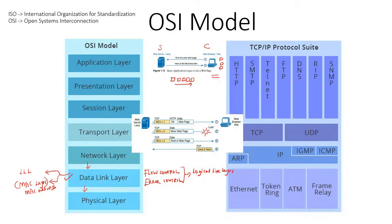The final layer is the physical layer. The physical layer represents the actual physical media — that is Ethernet, fiber optic, or Wi-Fi. When a host chooses to send a packet to another host, the network cable represents the physical media.